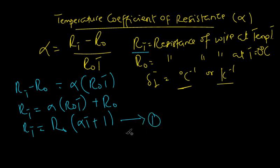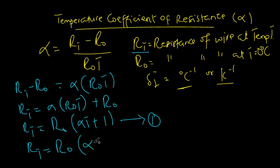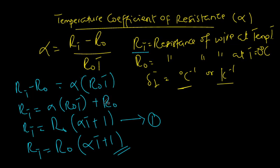This is the equation we'll be using mostly to solve examples on temperature coefficient of resistance. The resistance at a particular temperature equals the initial resistance of the wire at zero degrees Celsius times (the temperature coefficient times the temperature, plus one). This formula can be used to calculate the resistance at a particular temperature, the resistance at zero degrees, or even the temperature itself, depending on what the question asks.